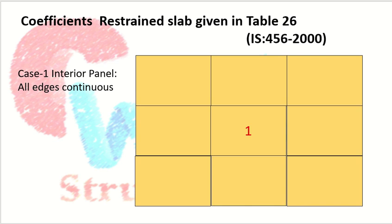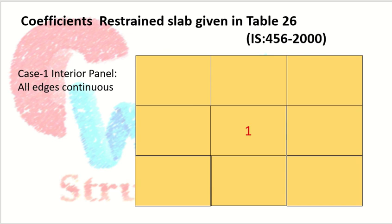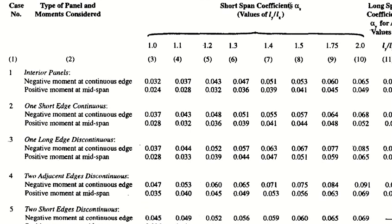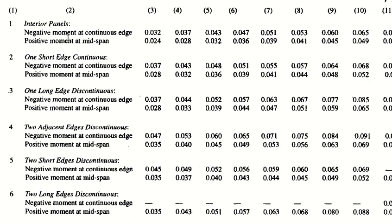Now let's discuss the bending moment coefficients for restrained slabs. The formula is Mx = αx · w · lx² and My = αy · w · lx², where αx and αy are the bending moment coefficients. These coefficients are given in Table 26 of IS 456. The table provides shorter span coefficient αx and longer span coefficient αy, and they depend upon the ratio of longer span to shorter span as well as the type of panel.